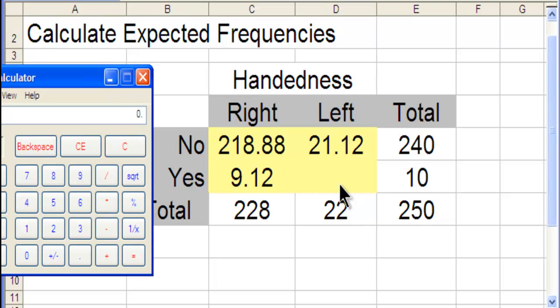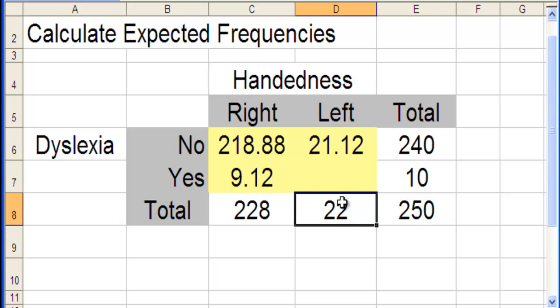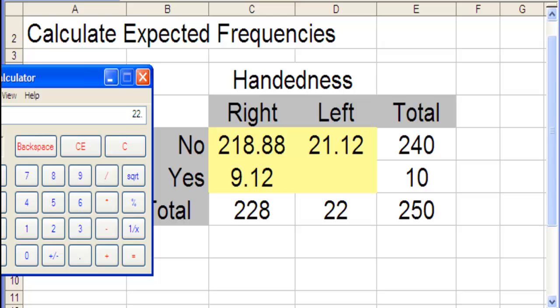Now, we've got this last cell. 22 times 10 divided by 250. And that's .88.